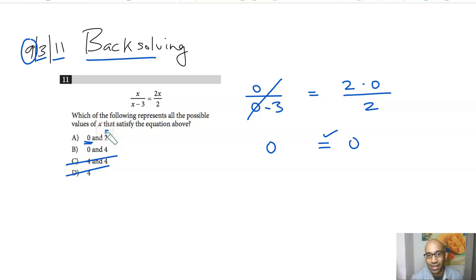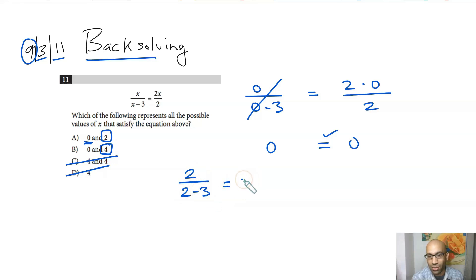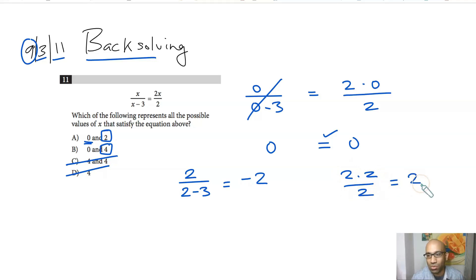Since 0 is a solution, you can immediately eliminate the two answer choices that don't include 0. Now you just need to check whether 2 or 4 is also a solution. Plugging in x equals 2: the left-hand side gives 2 divided by 2 minus 3, which is 2 over negative 1, equal to negative 2. The right-hand side gives 2 times 2 over 2, equal to positive 2. These don't match, so eliminate x equals 2.